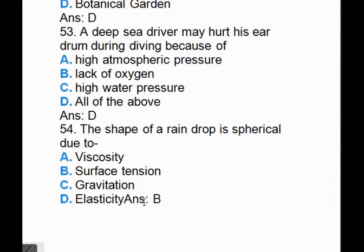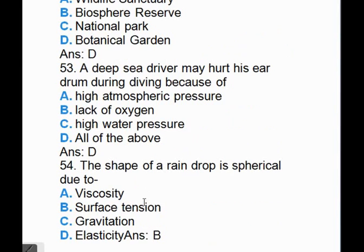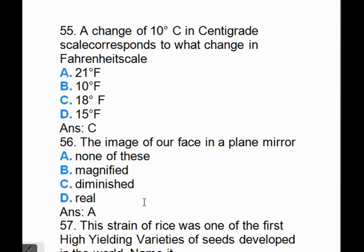The shape of a raindrop is spherical due to, answer is B, surface tension. A change of 10 degrees Celsius in Celsius scale corresponds to what change in Fahrenheit scale? Answer is C, 18 Fahrenheit.